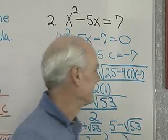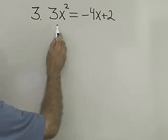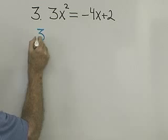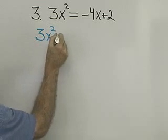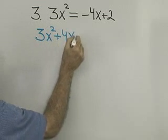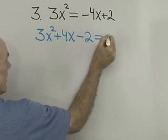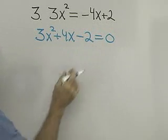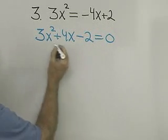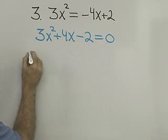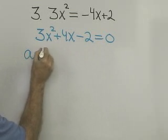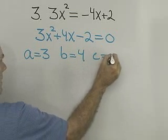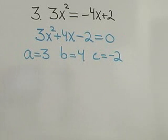Let's do one more problem. I have 3x squared equals negative 4x plus 2. Let's write it in standard form as 3x squared plus 4x minus 2 equals 0. We add 4x to both sides and we add negative 2 to both sides. We have our equation in standard form — it must be in standard form for us to identify a, b, and c. a is 3, b is 4, c is negative 2.